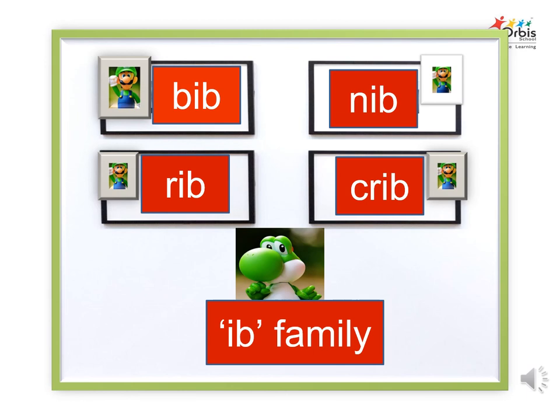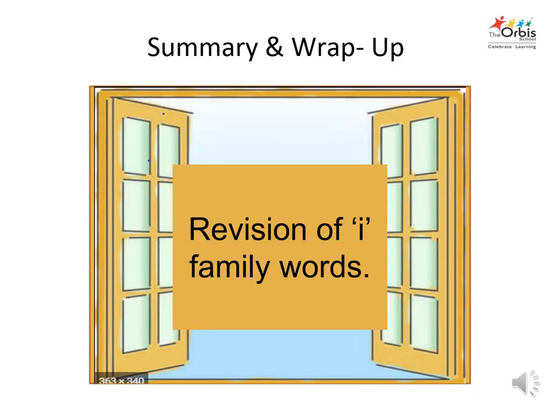The second family member is Nib. Say hello to Nib. The third family member is Rib. Say hello to Rib. The fourth family member is Crib. Say hello to Crib. Today we met the I family words again.